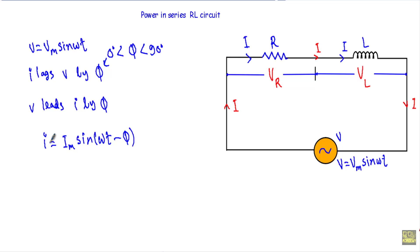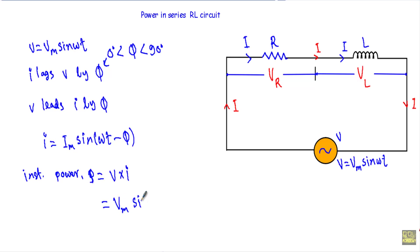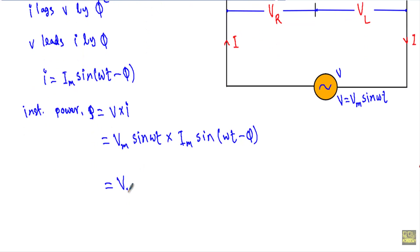Now we have the instantaneous voltage and instantaneous current. If I want to calculate the instantaneous power in the circuit, instantaneous power P is the multiplication of instantaneous voltage V and instantaneous current I. V is given by Vm sin(ωt) and I is given by Im sin(ωt − φ). So we have Vm sin(ωt) into Im sin(ωt − φ).